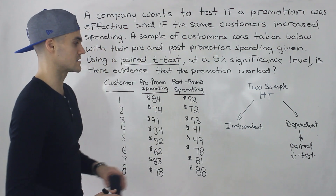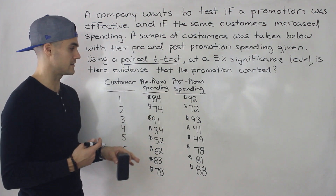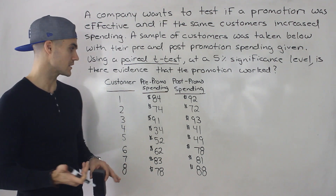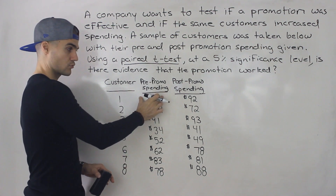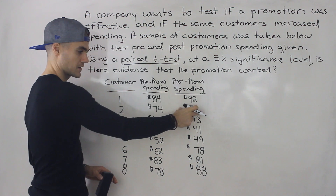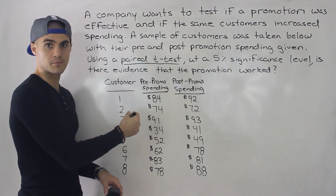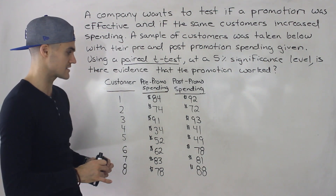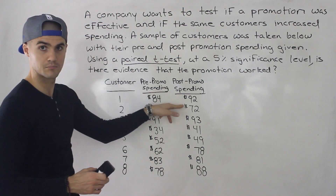For this specific example, how do you know these two samples are dependent? They're linked by the same customer. Dependent samples always have to be linked by something — in this case, the same customer. We have customer one with their pre-promotion and post-promotion spending, then customer two, and so on. When working with dependent samples, you always have the same number of observations in each group, unlike independent samples which can have different sample sizes.